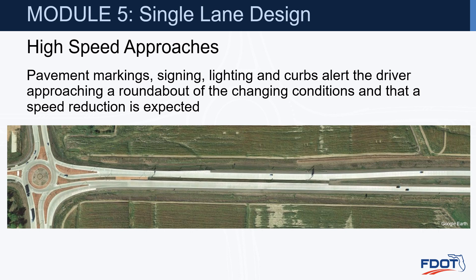Pavement markings, signing, lighting, and curbs alert the driver approaching a roundabout of the changing conditions and that a speed reduction is expected. For example, at a roundabout at the terminus of a freeway entering at 70 mph with a four-lane divided section, there is a curvature to the left then right, overhead signing, curb and gutter with a narrower median introduced, shoulders starting to decrease, additional overhead signing, lighting throughout, and then curvature into the roundabout. All these features step down as you approach to get the driver to slow down.